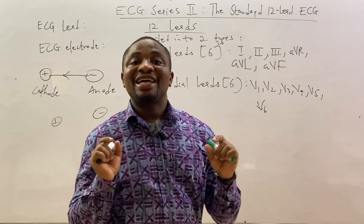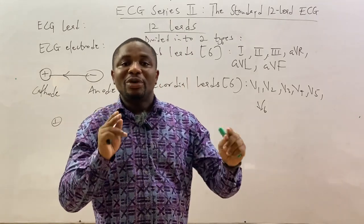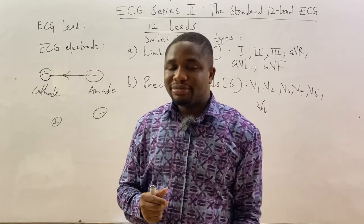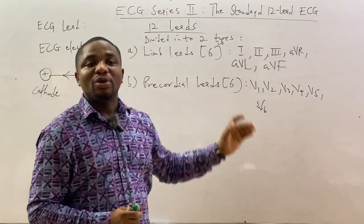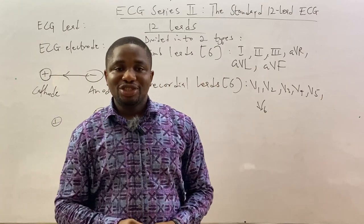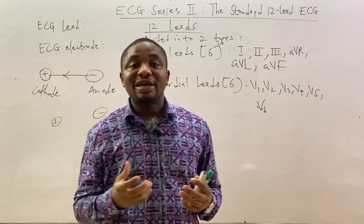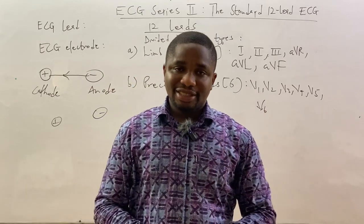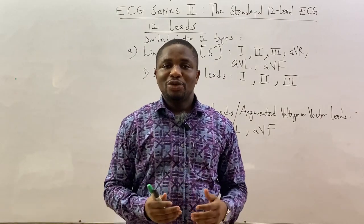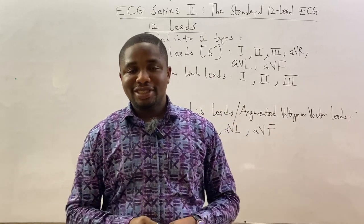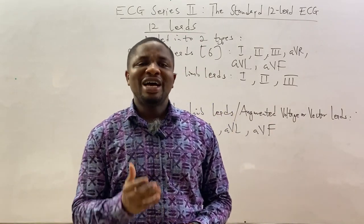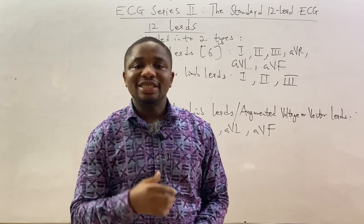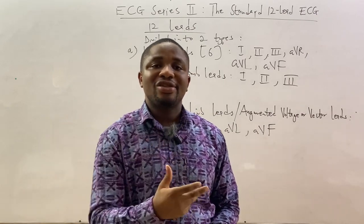The limb leads are attached to the limb, and there are six of them. The precordial leads have their electrodes attached to the chest wall, specifically the precordium — again, six. Now for the limb leads, we can divide them into two based on their polarity: the bipolar limb leads and the unipolar limb leads.